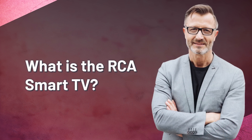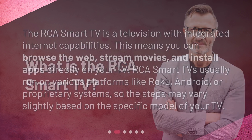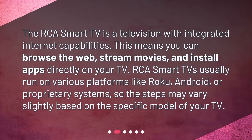What is the RCA Smart TV? The RCA Smart TV is a television with integrated internet capabilities. This means you can browse the web, stream movies, and install apps directly on your TV. RCA Smart TVs usually run on various platforms like Roku, Android, or proprietary systems, so the steps may vary slightly based on the specific model of your TV.